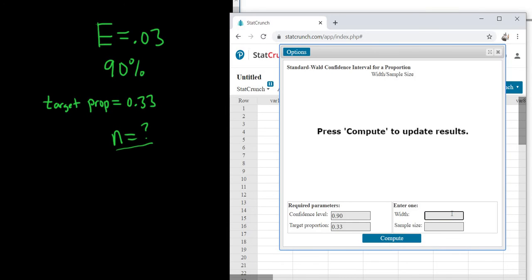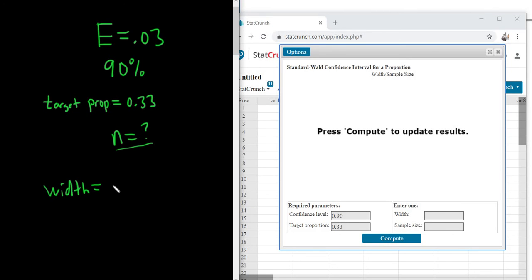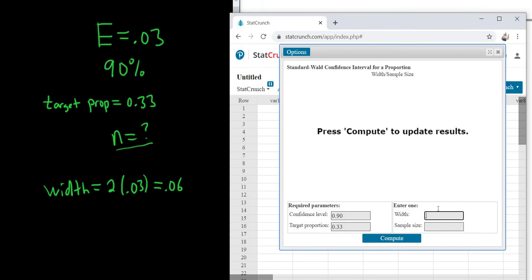What about the width? To figure out the width, all you do is take your E and multiply it by 2. So the width is always going to be 2 times E, always, no matter what. So 2 times 0.03 is 0.06. So you type that in, 0.06.